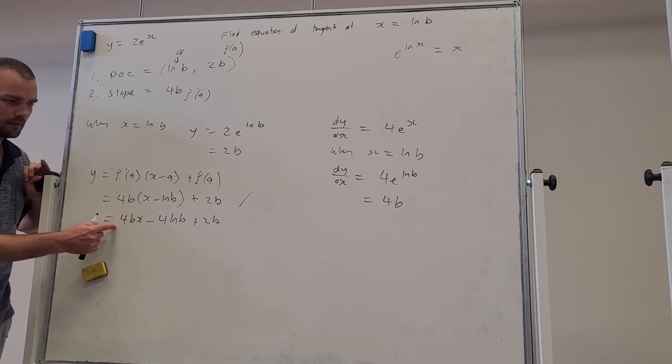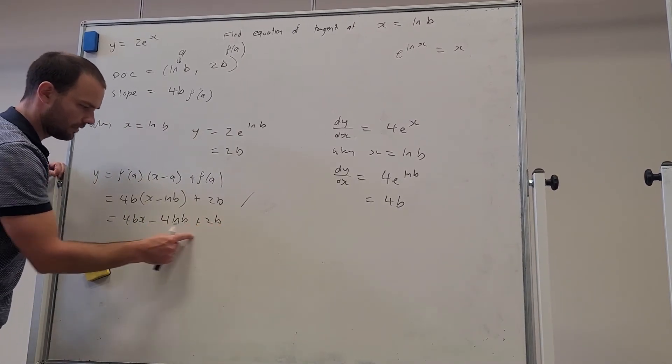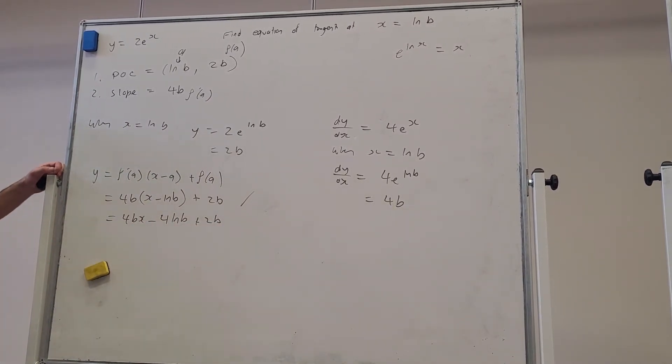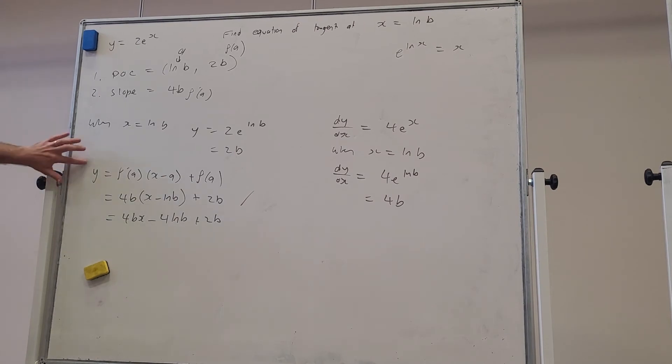All right, the slope of the line is 4b. And this is the y-intercept of the line. Remember, this is a tangent, so it's an equation of the line. Okay, part b.